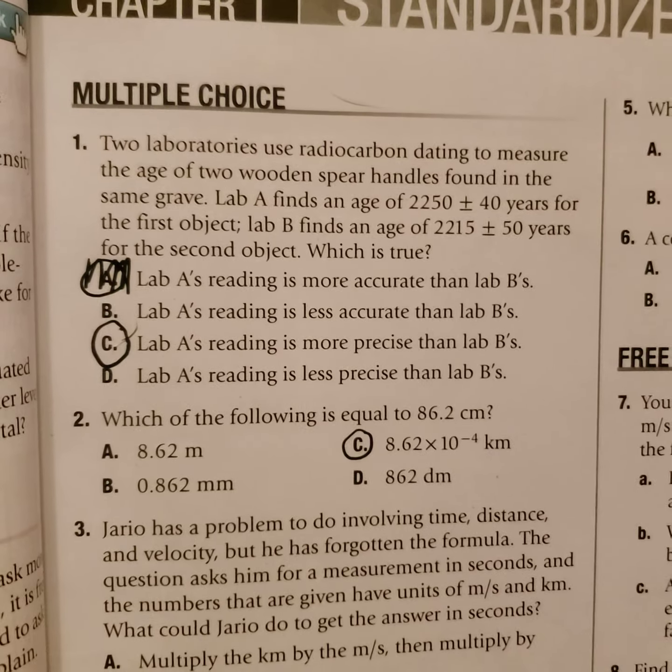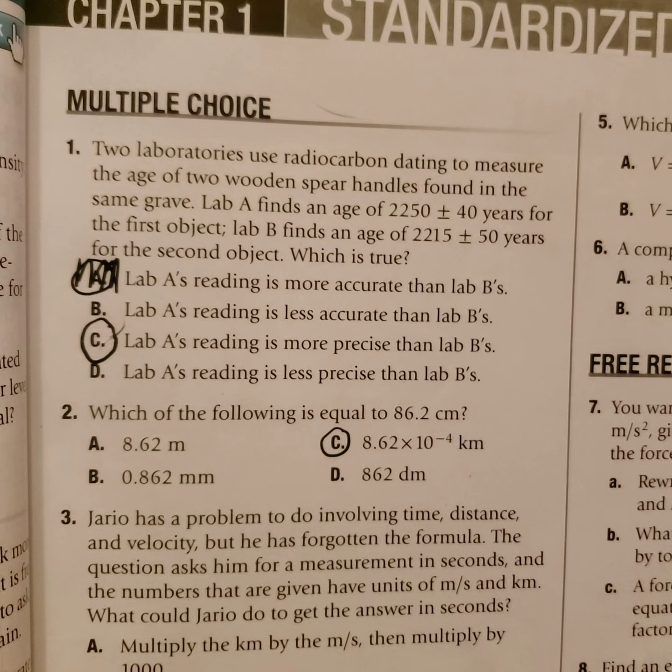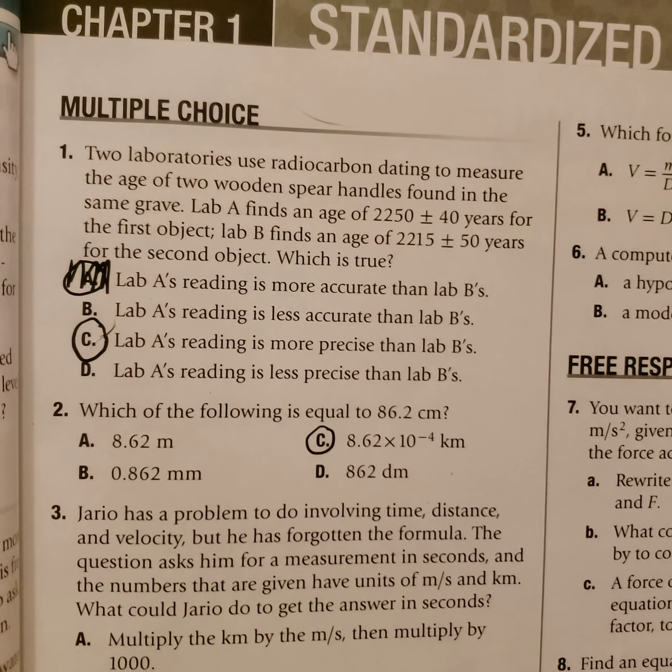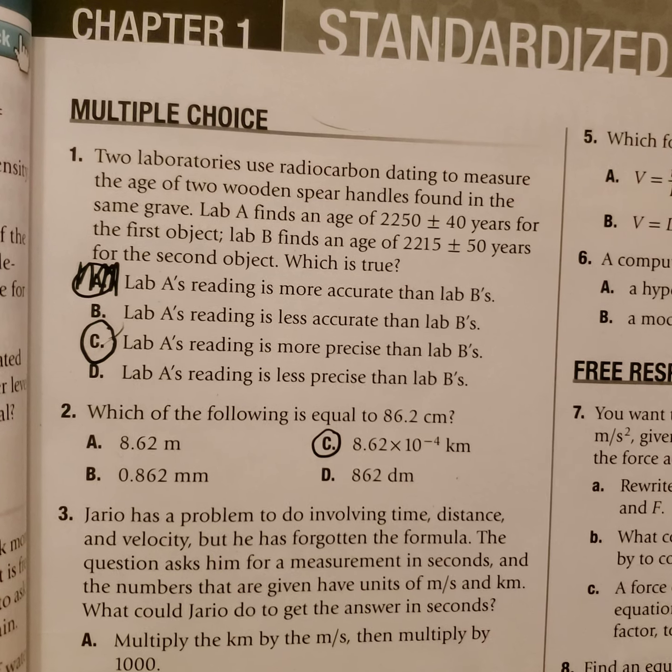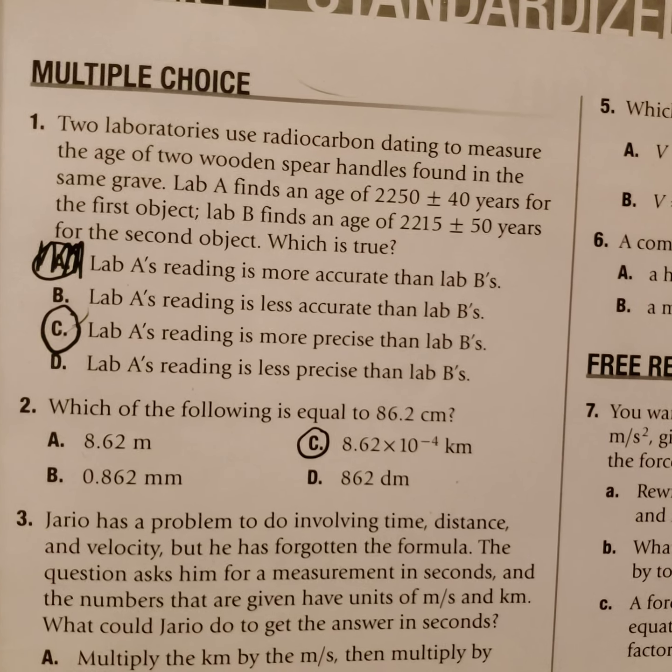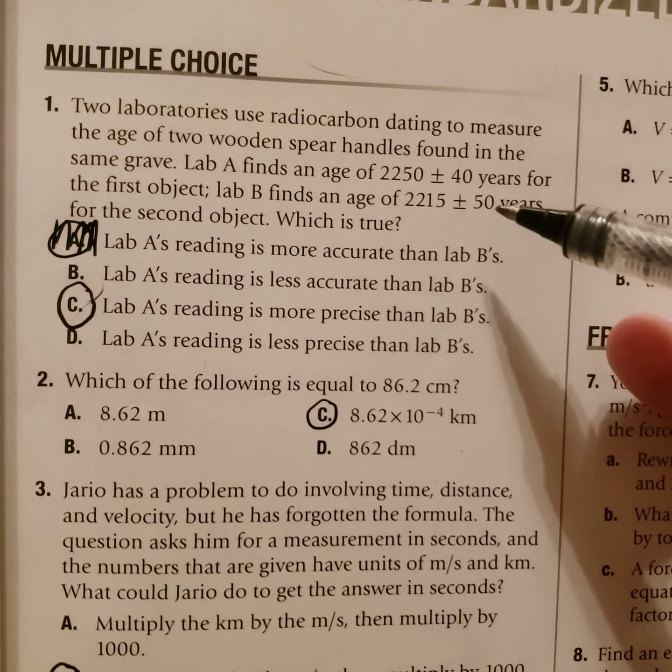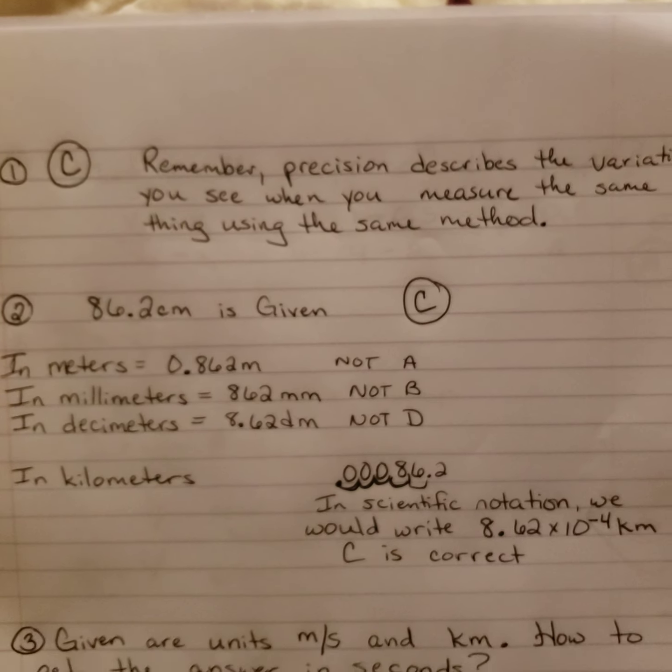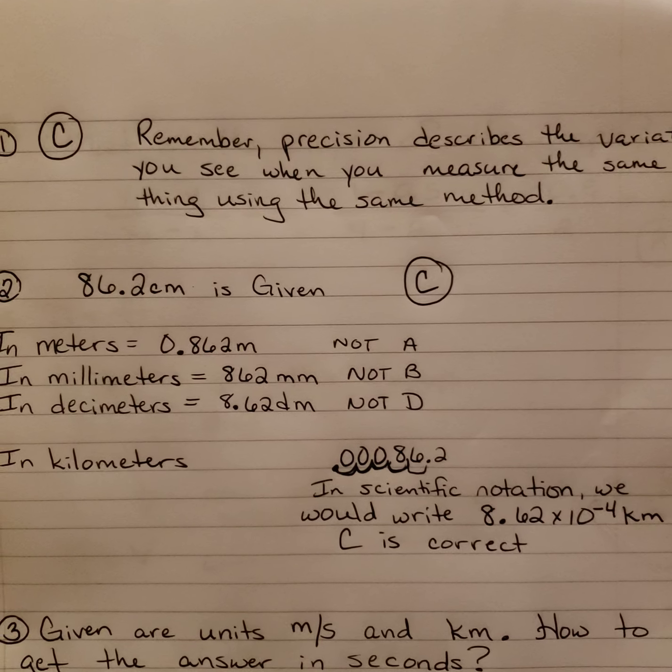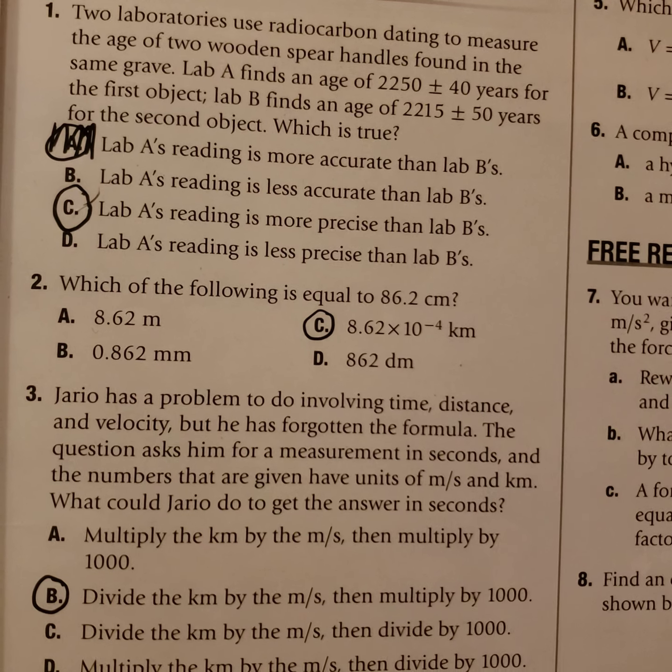If you take a look at the first problem, we have two laboratories using radiocarbon dating to measure the age of two wooden spear handles found in the same grave. Lab A calculated the age to be 2,250 plus or minus 40 years, and Lab B finds that age to be 2,215 plus or minus 50 years. What you want to concentrate on is the plus or minus 40 and plus or minus 50. Remember that precision describes the variation when you measure the same thing using the same method. Therefore, C is correct. Lab A's reading is more precise than Lab B's.